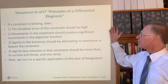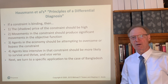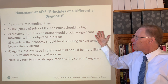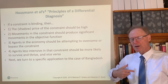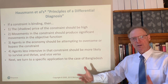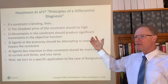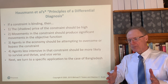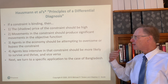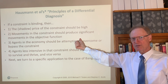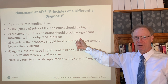We can think about the principles of a differential diagnosis developed by Ricardo Hausmann and colleagues. If a constraint is binding, then first the shadow price of the constraint should be high — there should be a very high underlying value to, for example, building another road or additional lanes. Movements in the constraint should produce significant movements in the objective function: making more high school seats or additional road lanes available should lead to noticeably substantial increases in investment and growth.